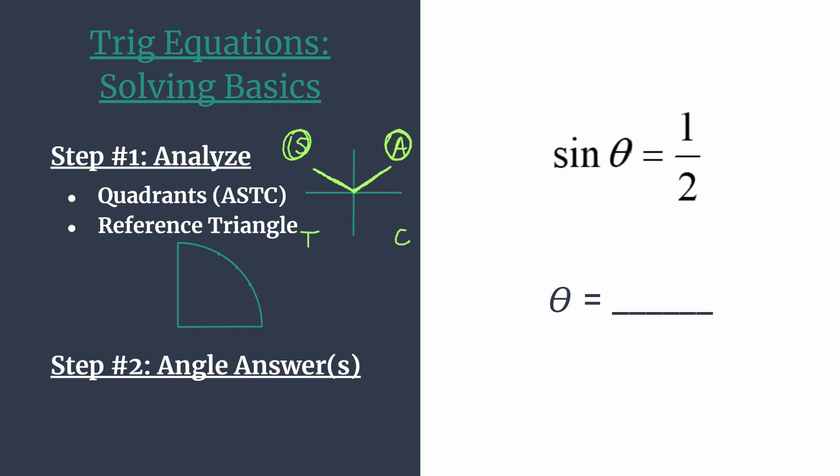And now we're ready to determine which reference triangle we should be using. So if you aren't familiar with your special right triangles and how they work on the unit circle, I'll post a link to unit circle basics. But right now, we're going to assume we know that, and we're looking at a sine value equal to one half.